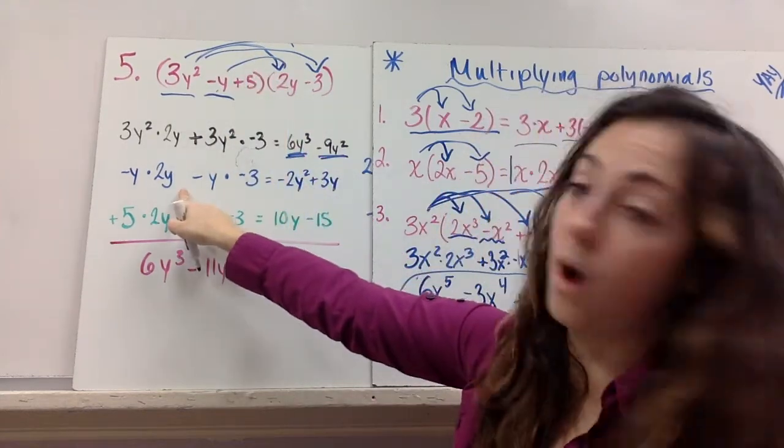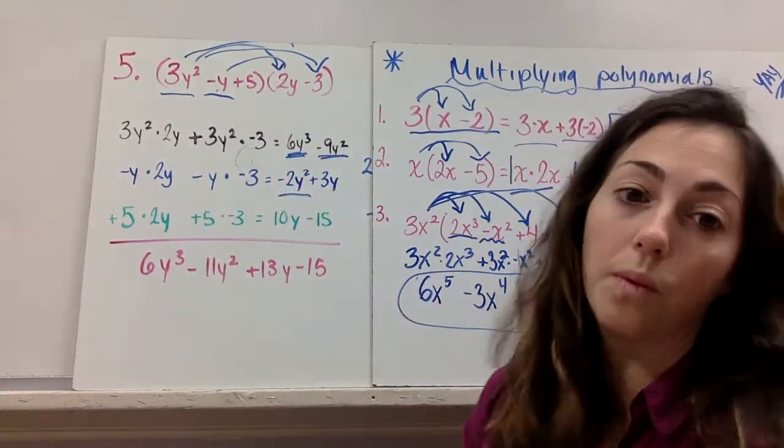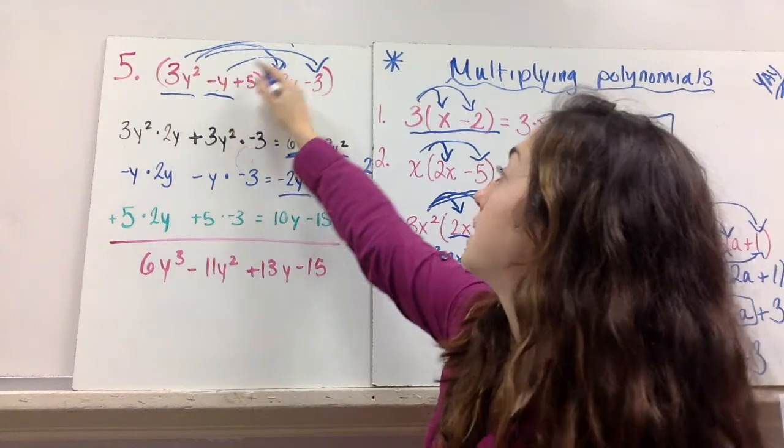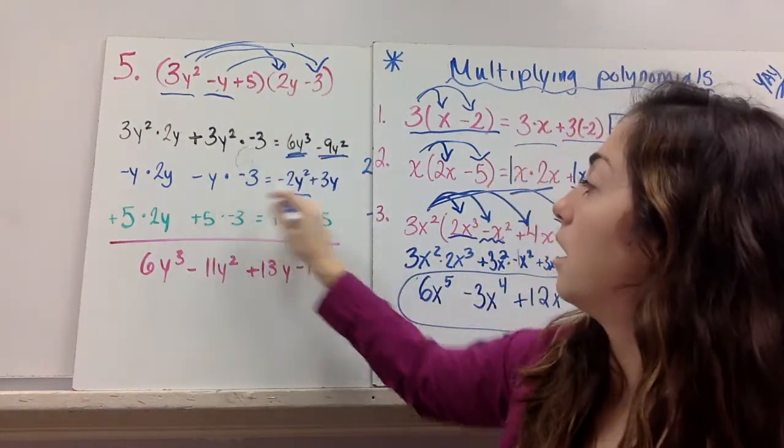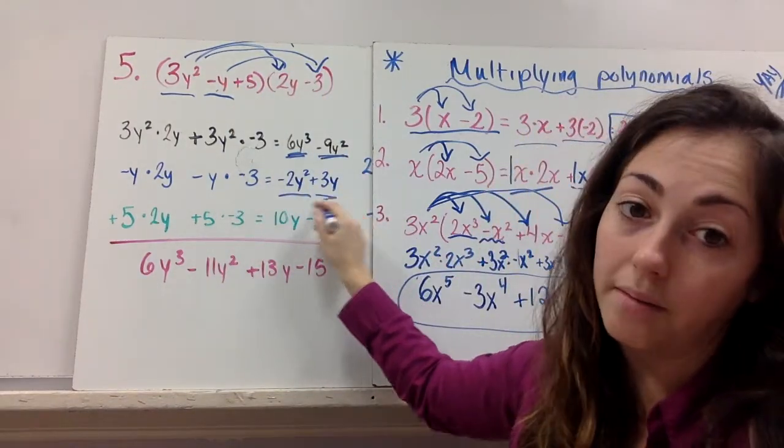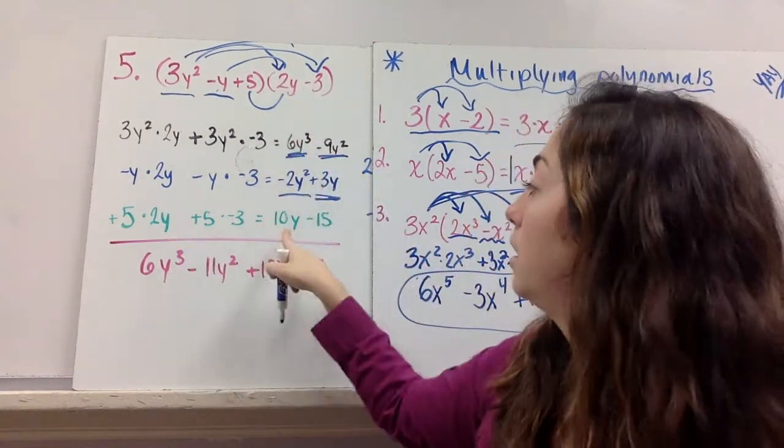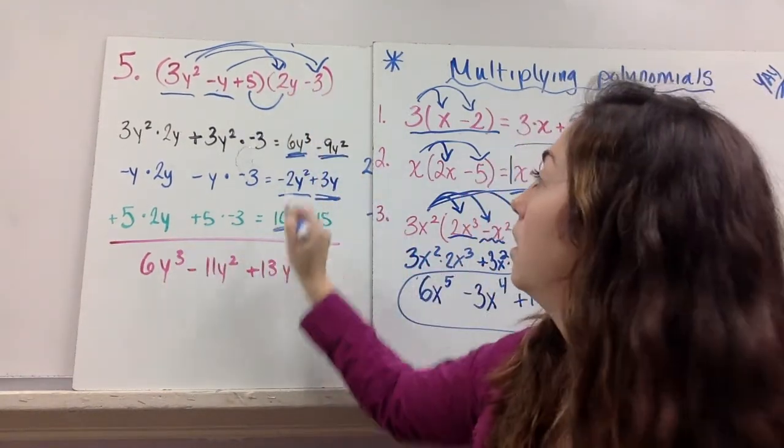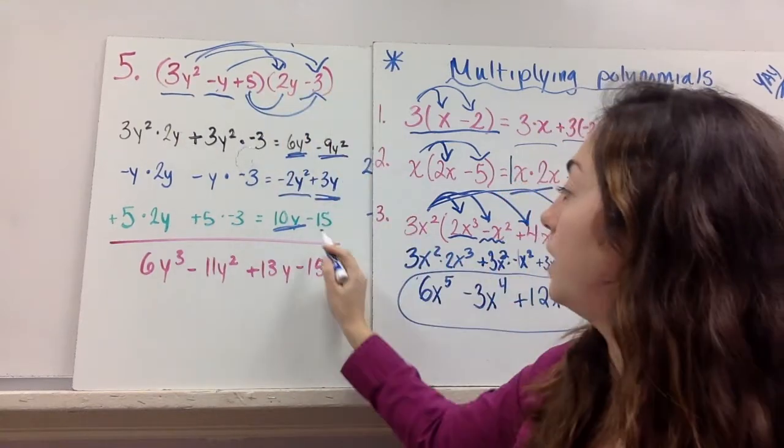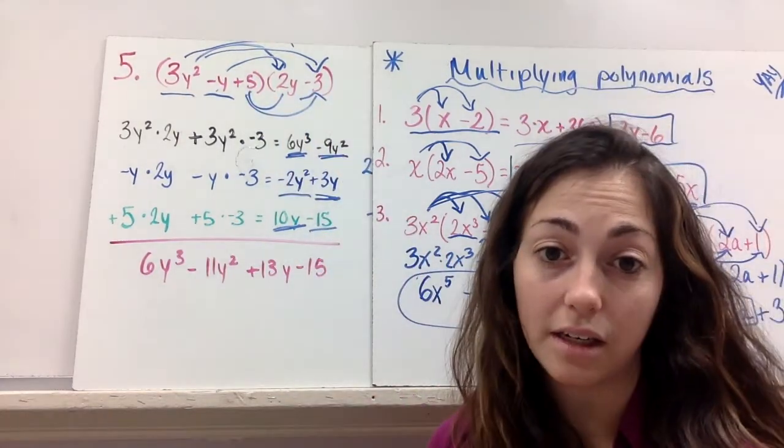Now I'm working here. Negative y times 2y. I get negative 2y squared. Negative y times negative 3. I get positive 3y. Last one to do. 5 times 2y. 10y. And 5 times negative 3 is negative 15.